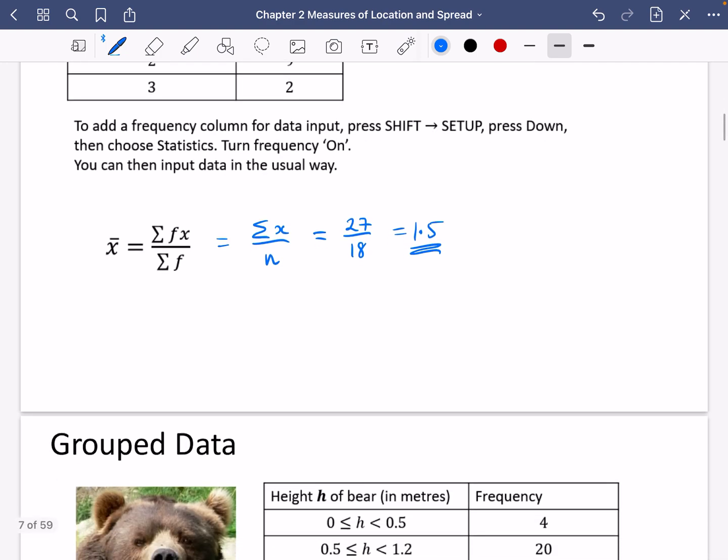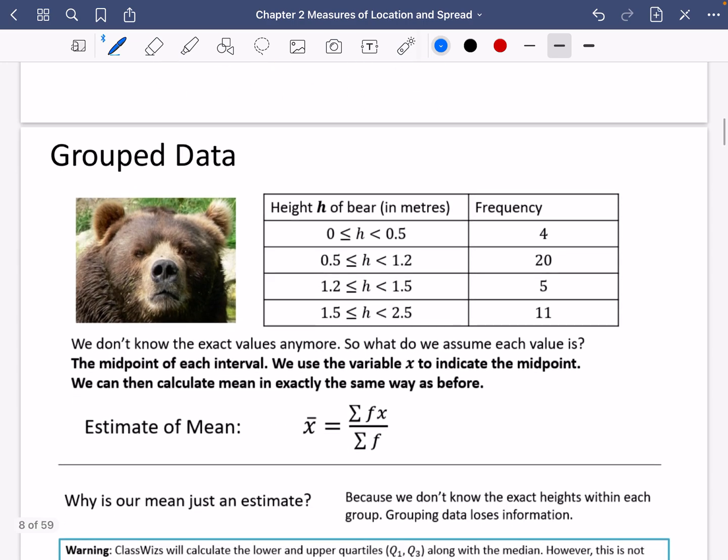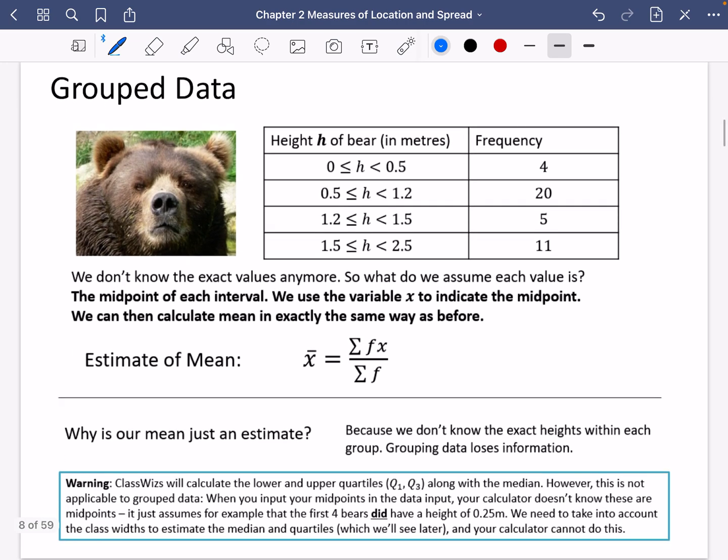So we're just going to do one last bit now of thinking about it with grouped data. Now you can't type grouped data into your calculator. I have got an example here about some bears. The height h of these bears in meters is written in these ways. We've got between zero and 0.5, there were four bears, tiny little teddy small bears.